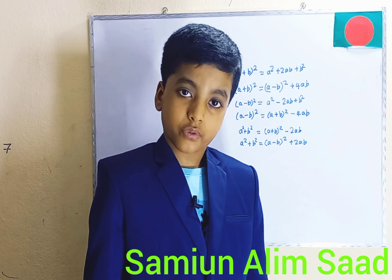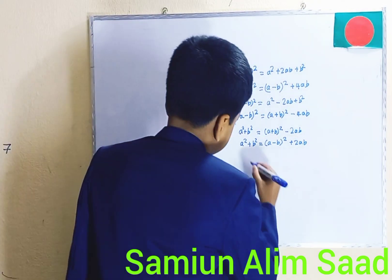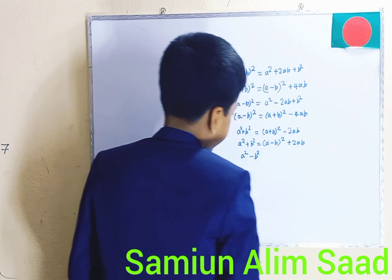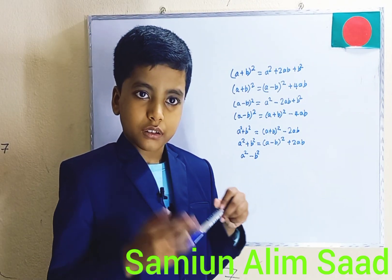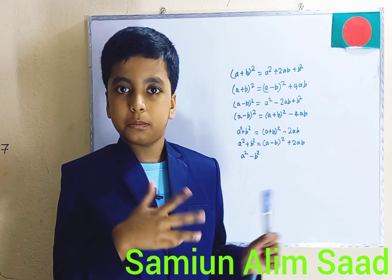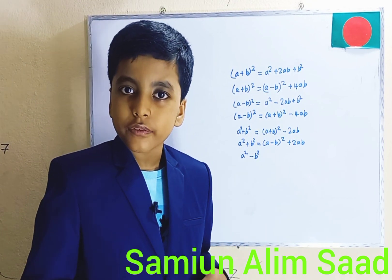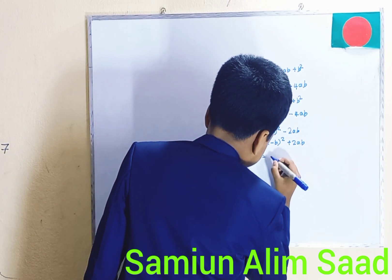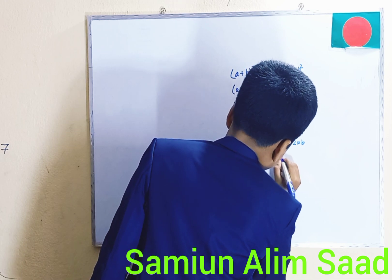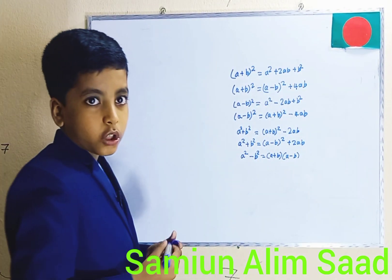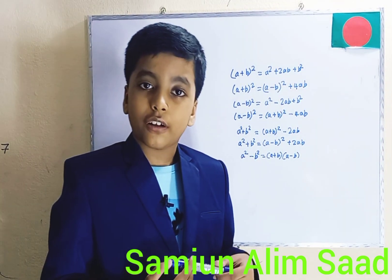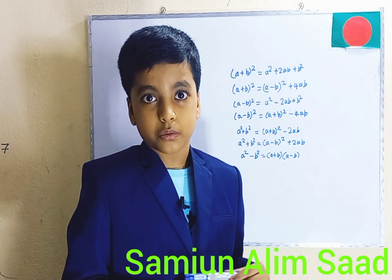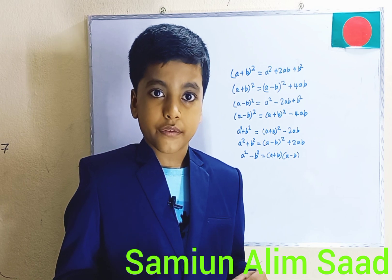Let's move to the last formula for this video, and that is A squared minus B squared. This is the formula that has only one known formula with it — the other one hasn't been discovered yet, or might have many but we haven't found those. A squared minus B squared is equal to A plus B times A minus B. That is all the formulas for today. When I said last formula, I meant the last formula for this video — not the last formula in algebra. There are lots of other formulas we'll cover in future videos.